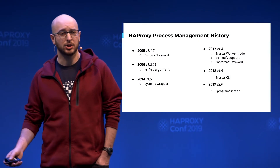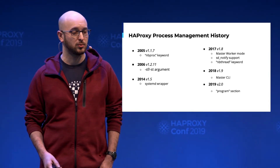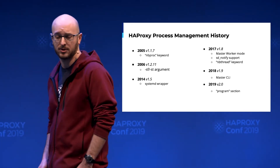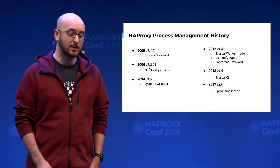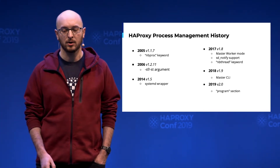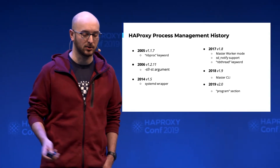The important thing is the system developer, which was the ancestor of the master-worker mode. Basically it was an external binary which was launching HAProxy on link signals. It was made to be compatible with systemd because the daemon mode of HAProxy wasn't compatible with it. In version 1.8, we wanted to reintegrate this feature within HAProxy so we have only one binary to do this. And after that, we extended it with the master CLI and the program section.